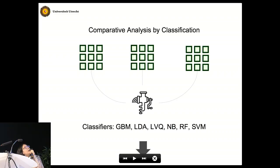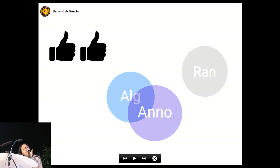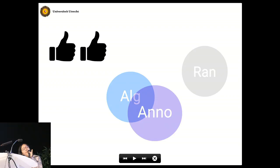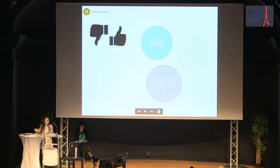We put these three pattern sets into the feature extraction toolbox jSymbolic 2 and extract features such as note density, average note duration, and most common pitch class. By comparing and analyzing pattern features using six classification algorithms, we hope to find systematic group differences and what those differences tell us about human annotations, algorithm output, and random excerpts. Please come to our poster for results and discussion.